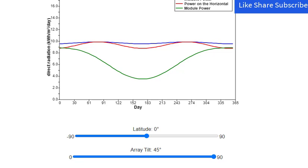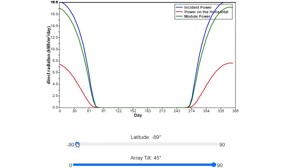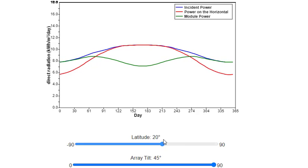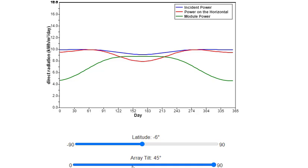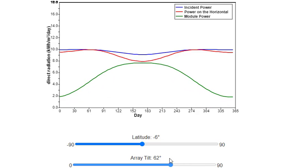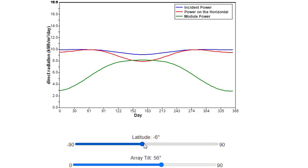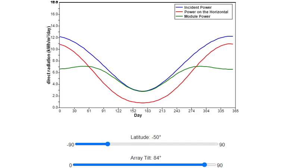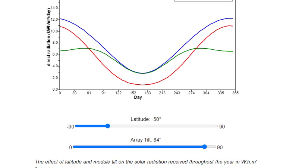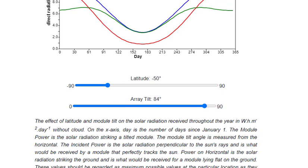The effect of latitude and module tilt on the solar radiation received throughout the year. On the x-axis, day is the number of days since January 1. The module power is the solar radiation striking a tilted module. The module tilt angle is measured from the horizontal. The incident power is the solar radiation perpendicular to the sun's rays, and is what would be received by a module that perfectly tracks the sun. Power on horizontal is the solar radiation striking the ground, and is what would be received for a module lying flat on the ground.